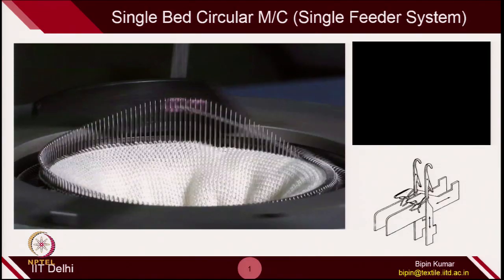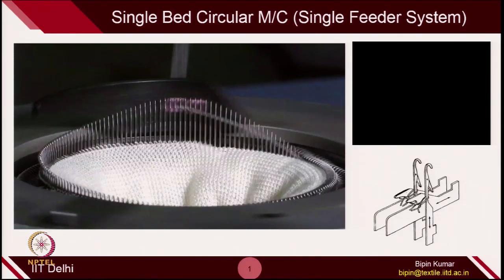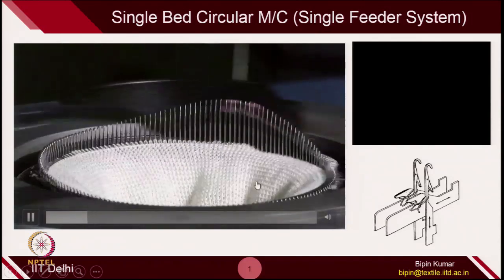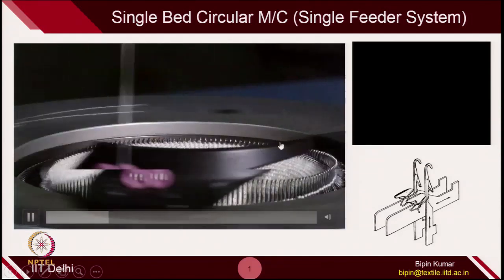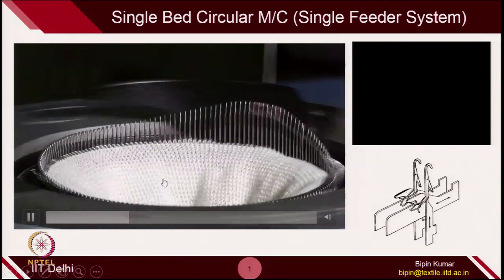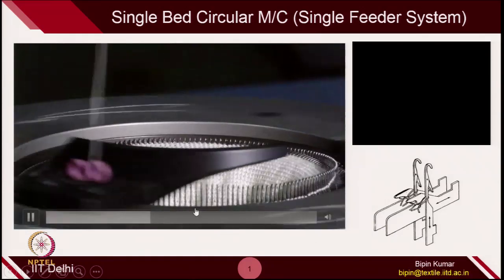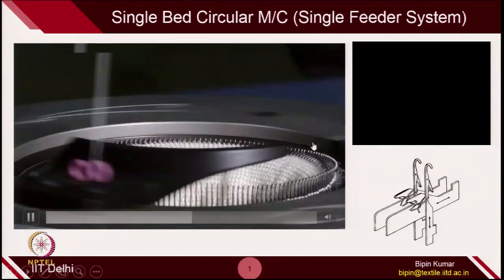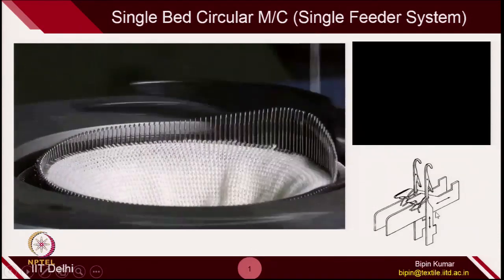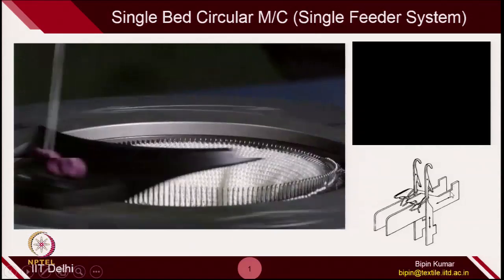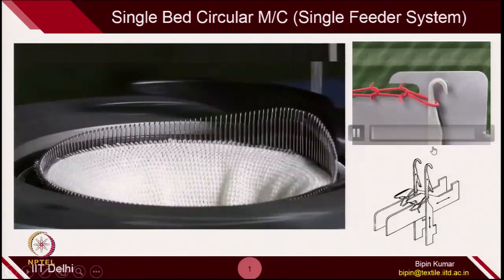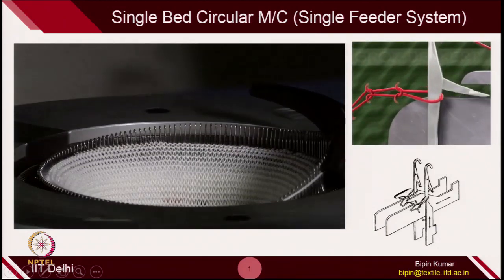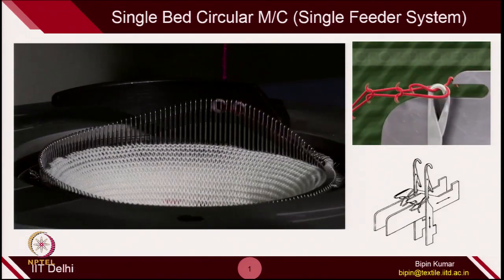Just a quick recap. I hope you remember this video showing how this particular single bed circular machine utilizes yarn and creates fabric with the help of knitting action. In this machine, we have also seen how the sinker helps in loop formation — in holding, releasing, and making loops.